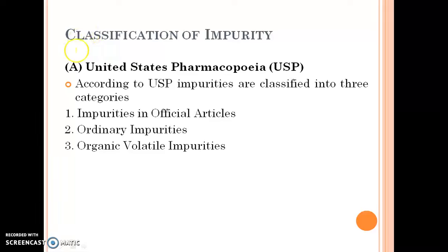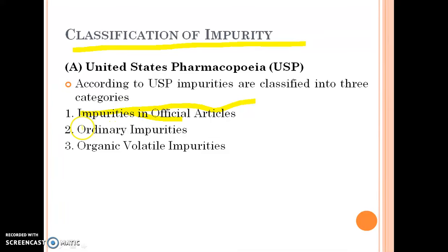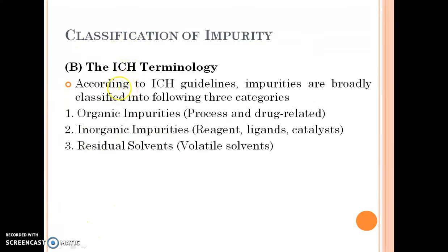Now we will come to the classification of impurities. According to USP, impurities are classified into three categories: impurities in official articles, ordinary impurities, and organic volatile impurities. According to ICH guidelines, impurities are again classified into three categories: organic impurities (process and drug related), inorganic impurities (reagent, ligands and catalyst related), and residual solvents (volatile solvents).